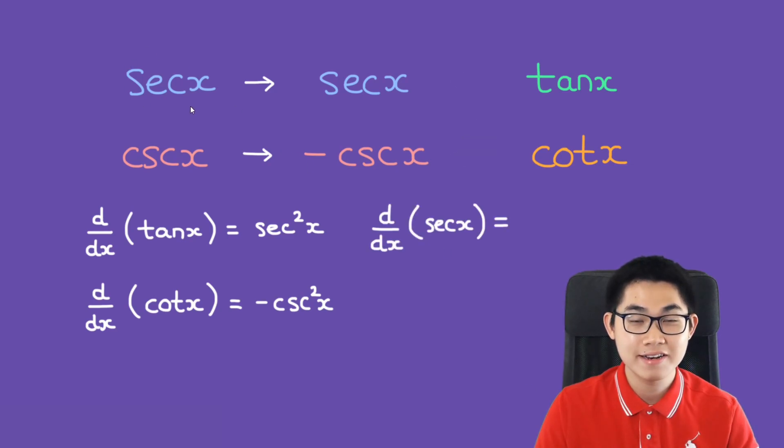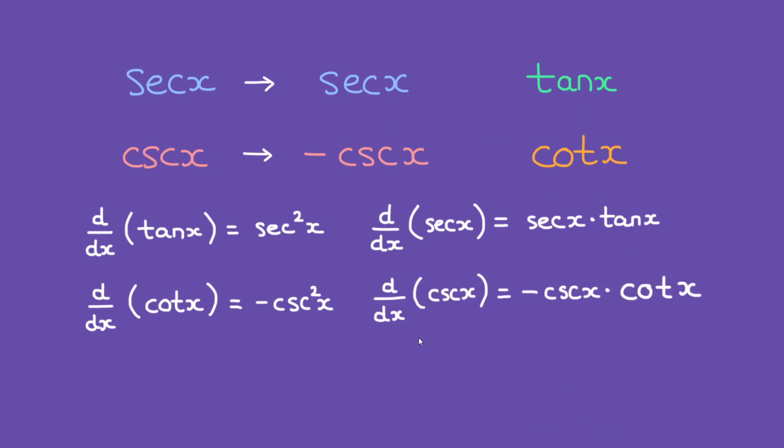If we start on the left, it's going to be slightly different. So what is the derivative of secant of x? Well, just erase these two arrows here, and you have secant of x times tangent of x. And finally, the derivative of cosecant of x is going to be negative cosecant of x times cotangent of x.